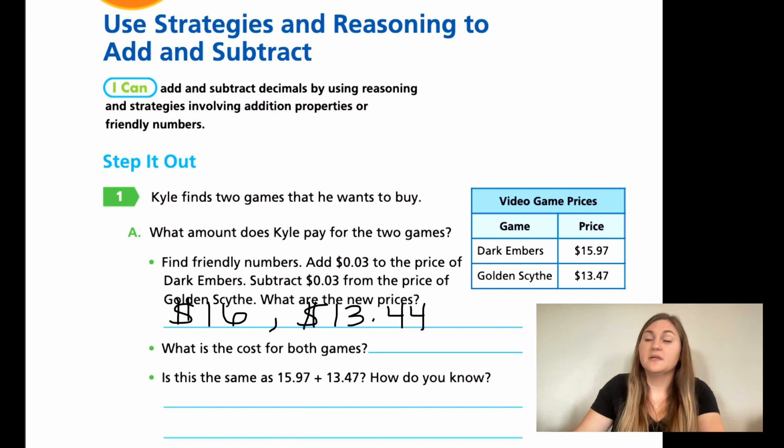So then what is the cost of both games? I'm going to go ahead. You can add these over to the side or I'm going to show you how they want you to do this mentally. So in the ones place, I have a 6 here and a 3 here. In my ones place, I'm going to have a 9. So if the decimal is here, and then in the tens place, I have ones. So 1 plus 1 is going to be 2. I have nothing in the cents for the $16. All I have is the 44 cents. So all I'm going to do is add 44 cents to the total. So now I have $29.44.